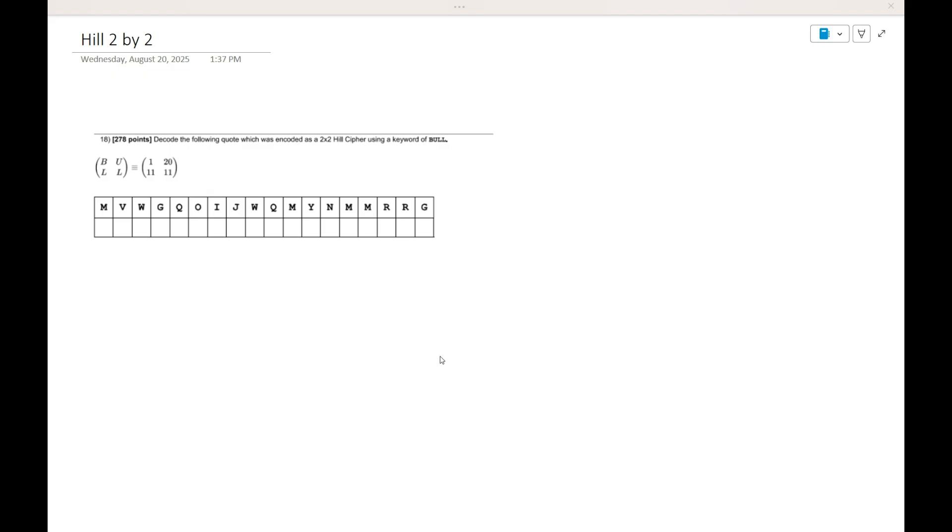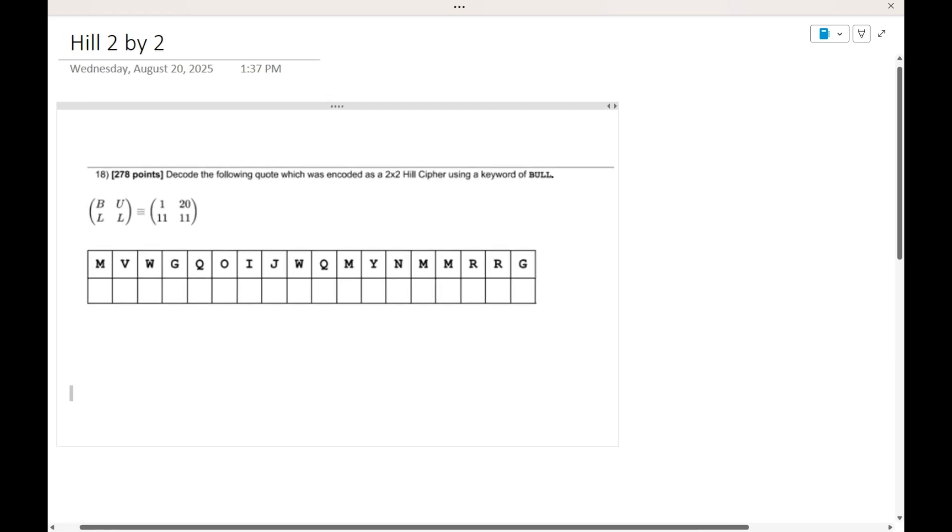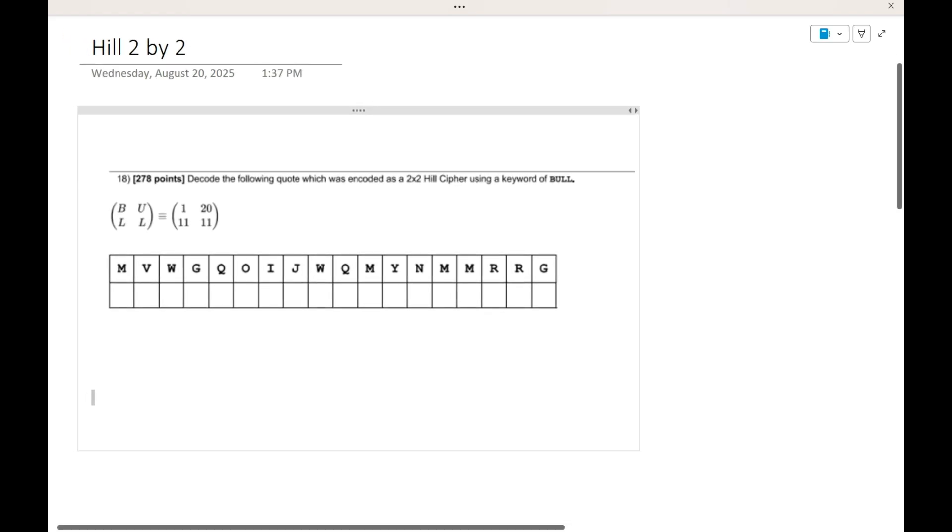The main thing that you need to know about the cipher is that it's based on a lot of matrix multiplication, which can sound scary at times, but you really just need to remember a couple formulas, and then it's going to be super simple to decrypt the cipher. So let's get started with this question, which says we want to decode the following quote using the keyword of bull.